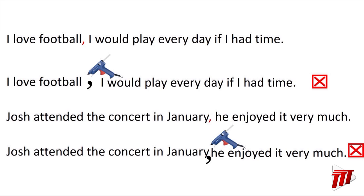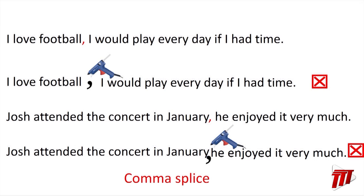This type of run-on sentence is called a comma splice. A comma splice is simply where you take a comma and use it to separate two independent clauses. And as we said, a comma is not strong enough to join two independent clauses.